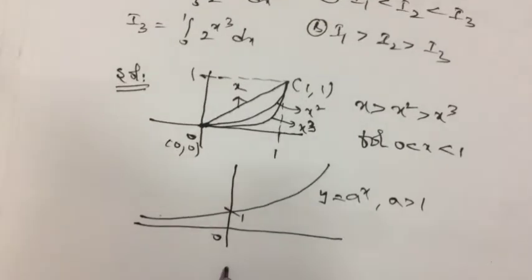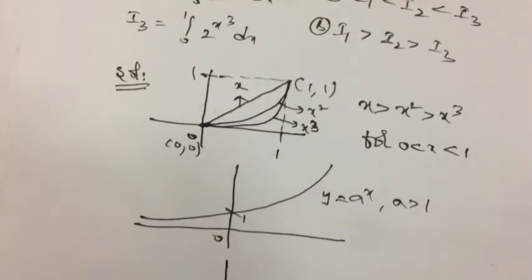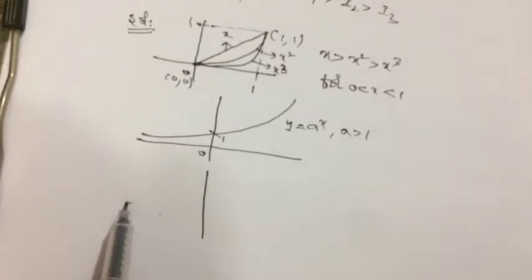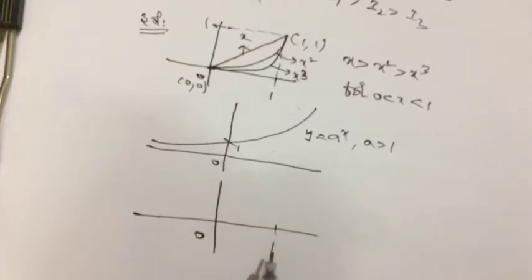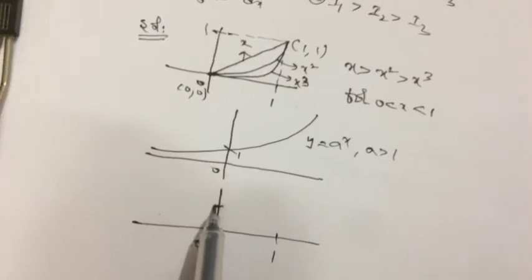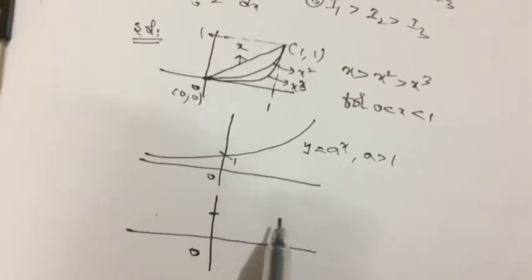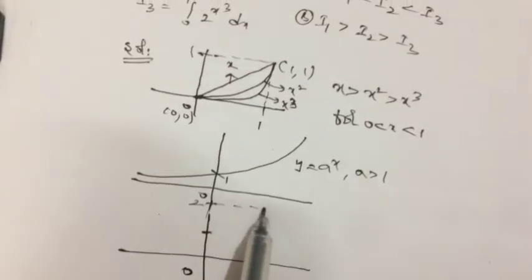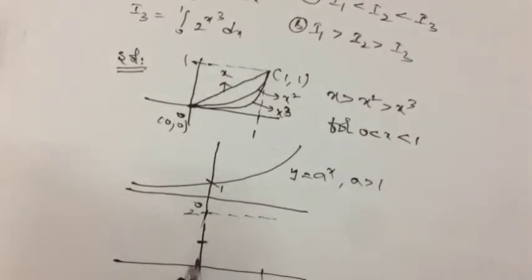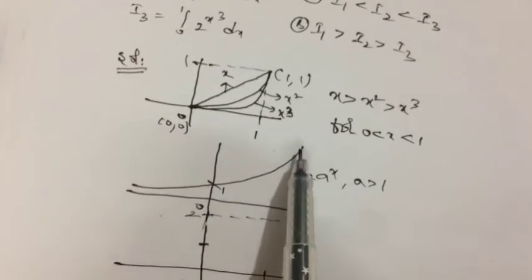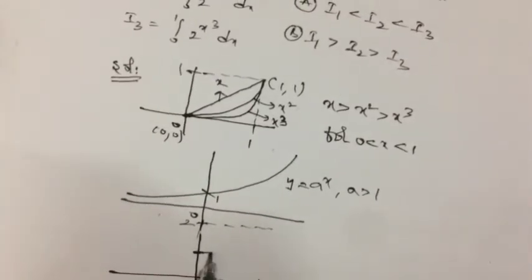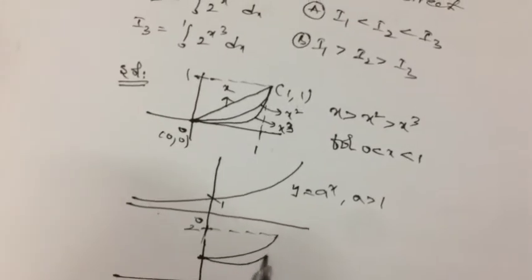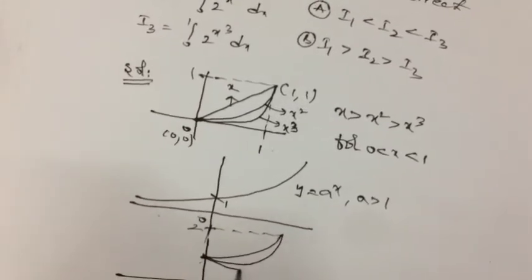So if I draw the graphs of these three functions, only in the interval 0 to 1 I have to draw, not for all intervals, only for 0 to 1. So at 0, all will become 1, clearly. At 1, all will become 2. So a^x is clearly increasing function. So 2^x will be like this. After that, 2^(x²), then 2^(x³).